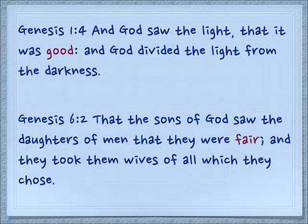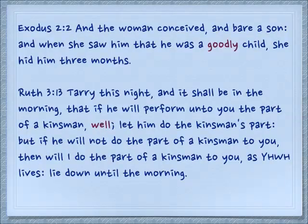In Genesis 1:4, 'And God saw the light, that it was good, and God divided the light from the darkness.' In Genesis 6:2, 'That the sons of God saw the daughters of men that they were fair' — Tov — 'and they took them wives of all which they chose.' In Exodus 2:2, 'And the woman conceived and bare a son, and when she saw that he was a goodly child, she hid him three months.' Was he behaving well? No, he's a tiny baby, but there was something about him that she found to be good.